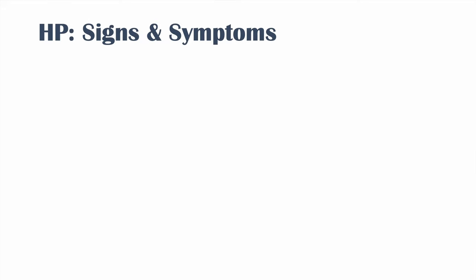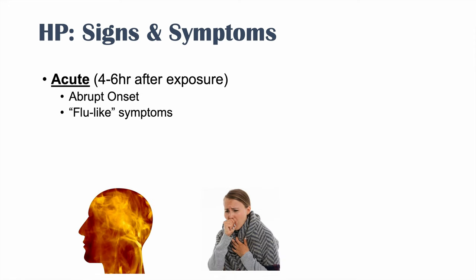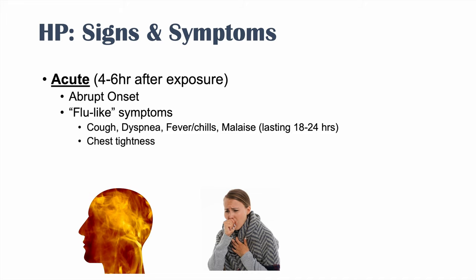Hypersensitivity pneumonitis is broken down into a few stages. The first is the acute phase, which usually occurs within 4 to 6 hours after exposure to a particular antigen. It has an abrupt onset with flu-like symptoms — cough, dyspnea or shortness of breath, fever and chills, and malaise. The flu-like symptoms often last 18 to 24 hours. They can also have chest tightness and associated nausea.